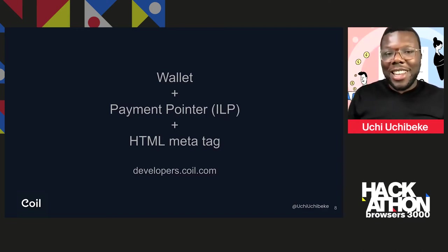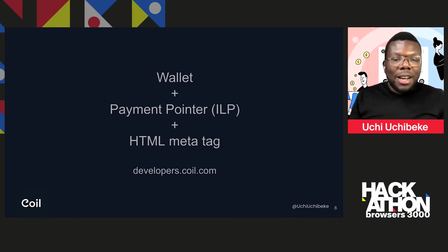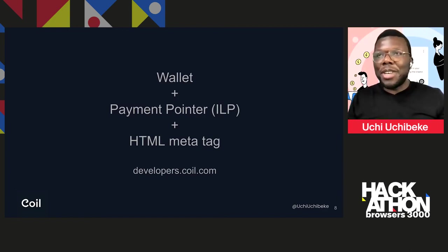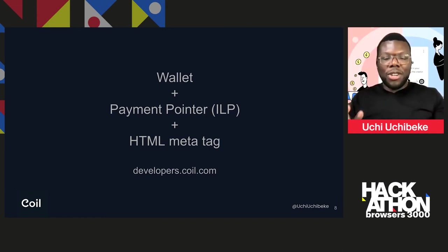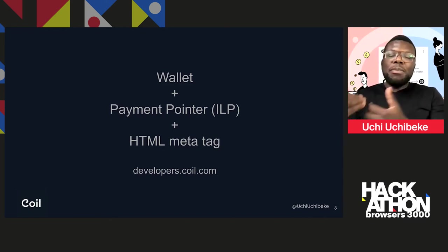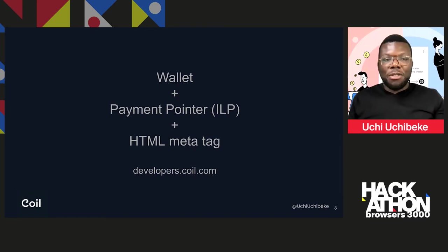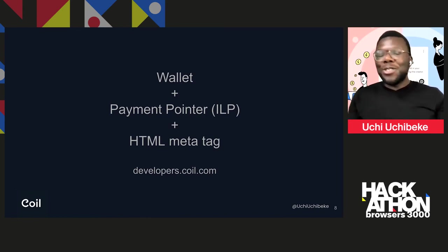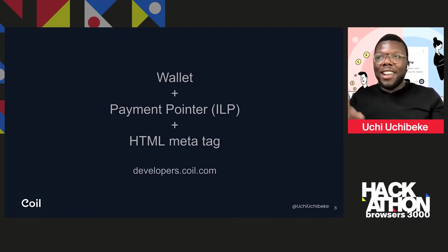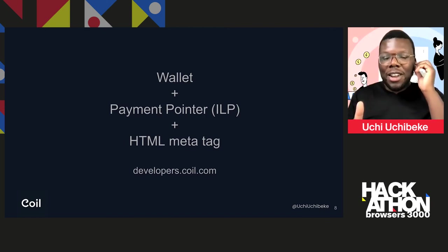I like to describe the payment pointer as an email address. With an email address, you receive data packets — text, videos, audio files — delivered to your email. With a payment pointer, it's similar, but the only difference is that you're getting payment packets. Those payment packets could be any currency — Bitcoin, USD, XRP, or other cryptocurrencies, or even non-cryptocurrency depending on your wallet provider. Think about the payment pointer as your email — it's unique, and payments are sent directly to it.